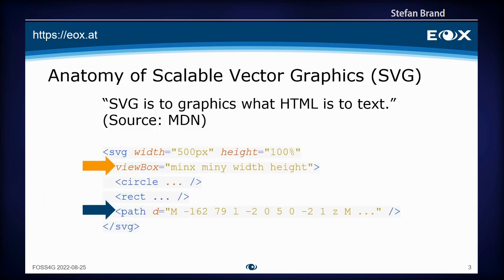I want to briefly show how SVG looks. The Mozilla Developer Network, MDN, says that SVG is to graphics what HTML is to text, and as you can see it looks very similar to a web page. It's an XML-based format and the SVG tag has some children which are the geometries — for example a circle, a rectangle, or a more complex path, which we use for the geometries exported from PostGIS.